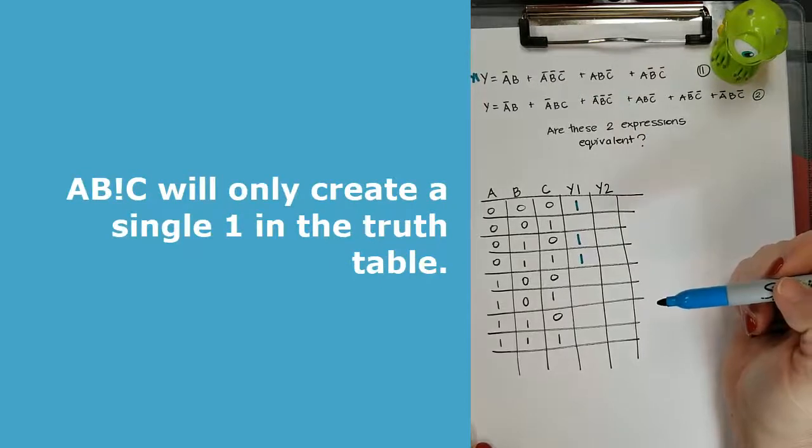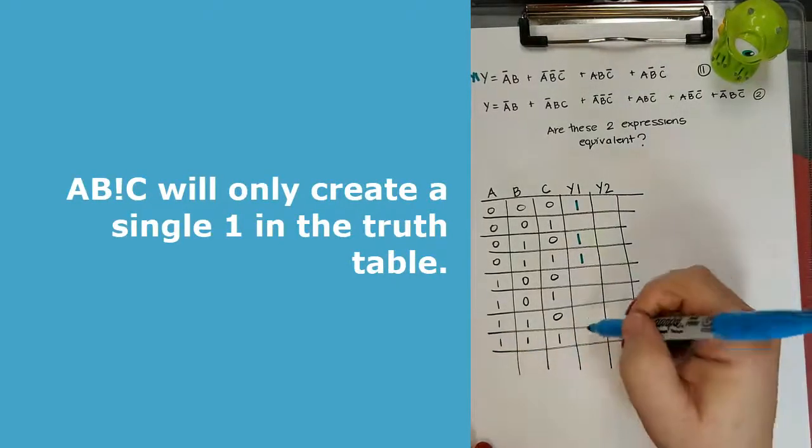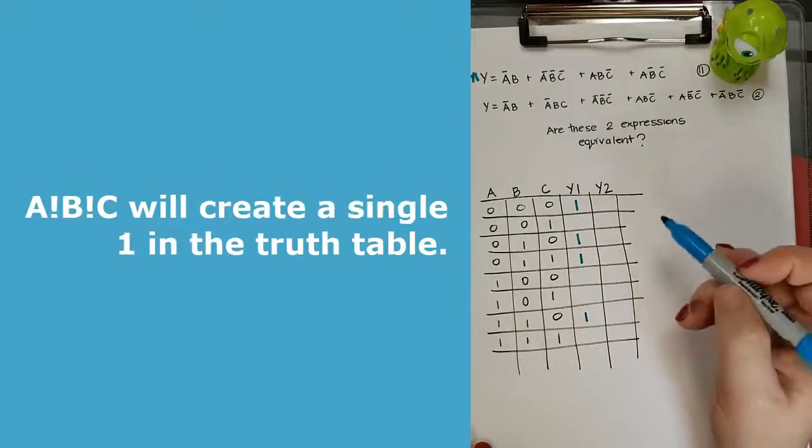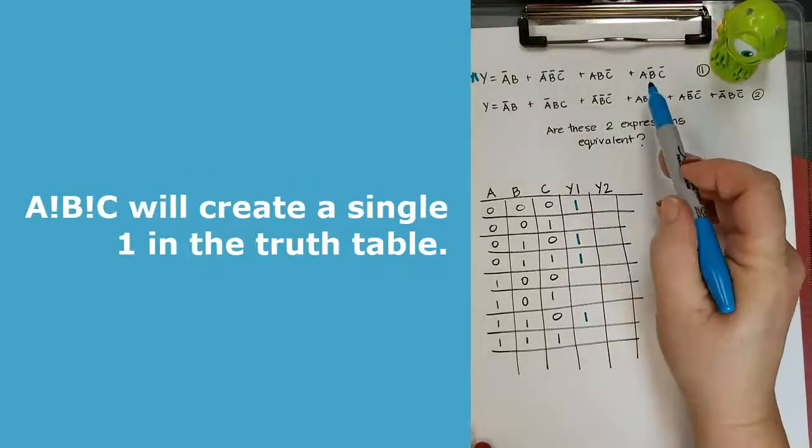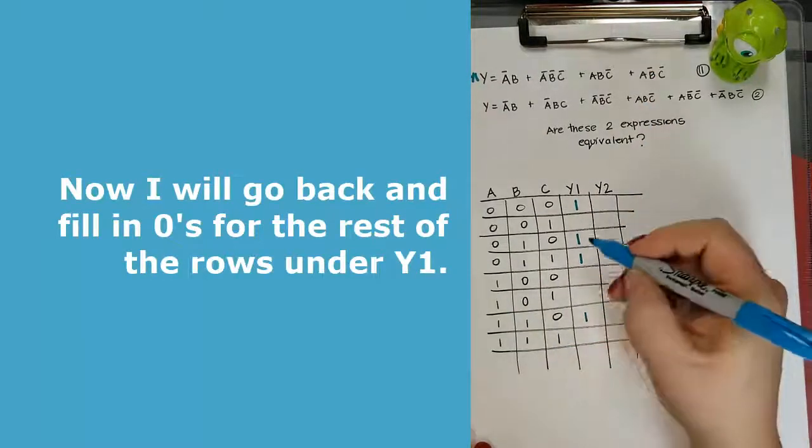And then A, not B, C makes a single line. And A, not B, not C made a single line. And now we go back and fill in zeros for the rest of the columns.